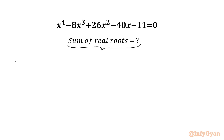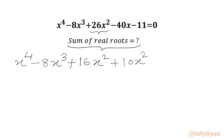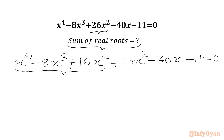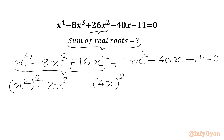Let us get started by writing our equation: x⁴ - 8x³. Then we have 26x², which we can write as 16x² + 10x². Then we have - 40x - 11 = 0.